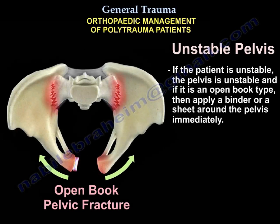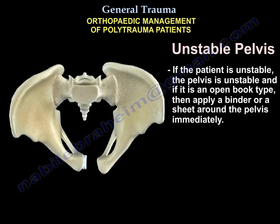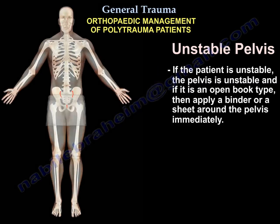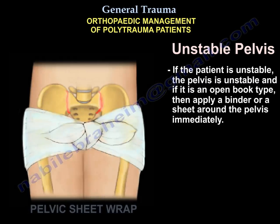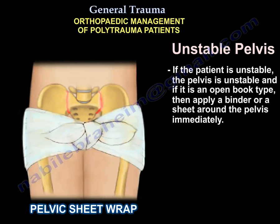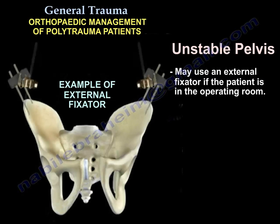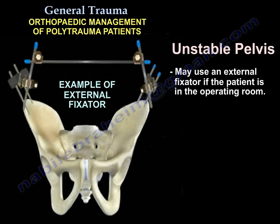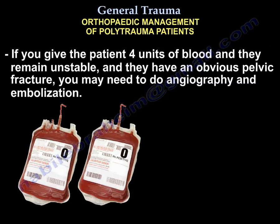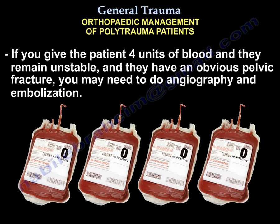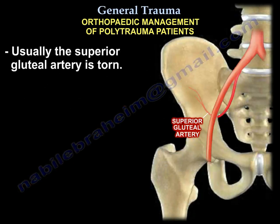In an unstable pelvic fracture where both the patient and pelvis are unstable, and the pelvis is an open book type, apply a binder or sheet around the pelvis immediately. In the operating room, perform an external fixator. If the patient receives four units of blood and remains unstable with an obvious pelvic fracture, angiography and embolization are likely needed — the superior gluteal artery is usually torn.